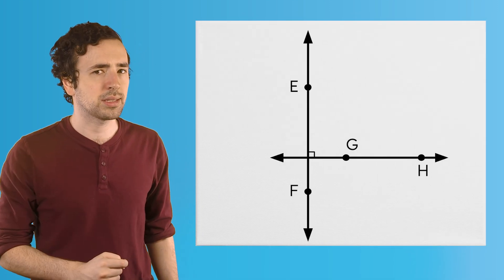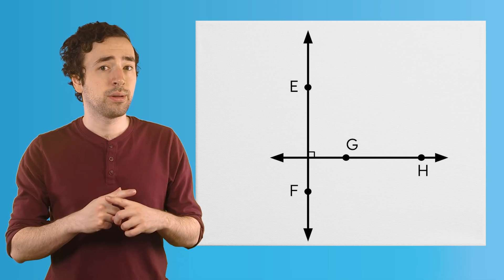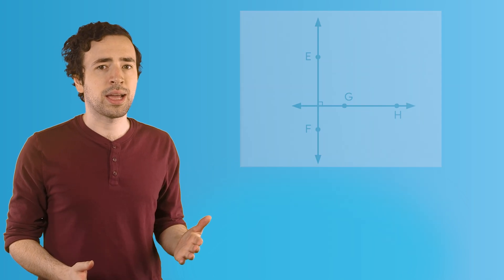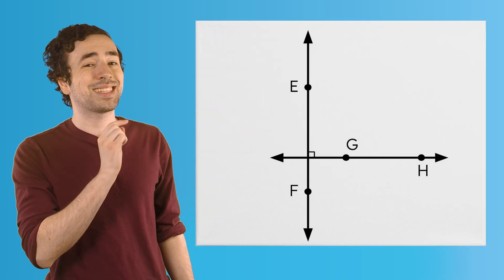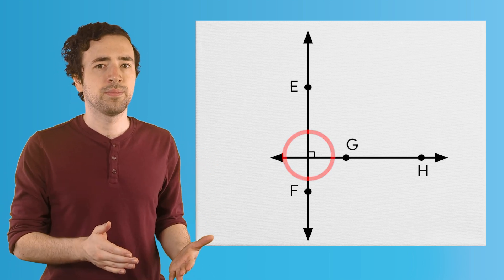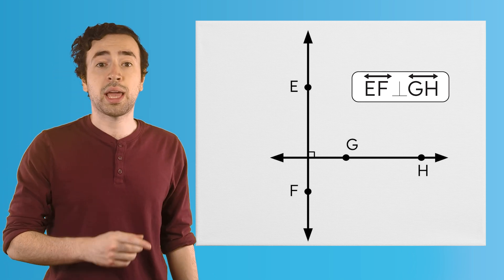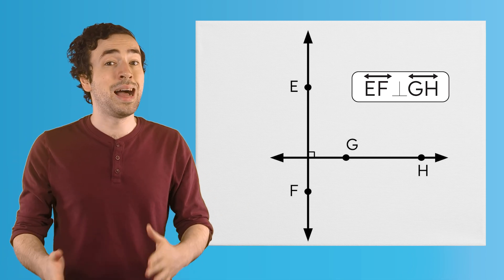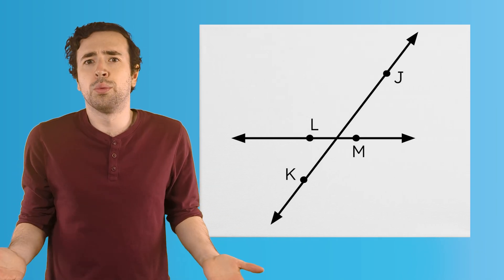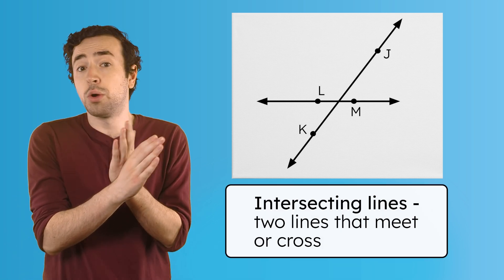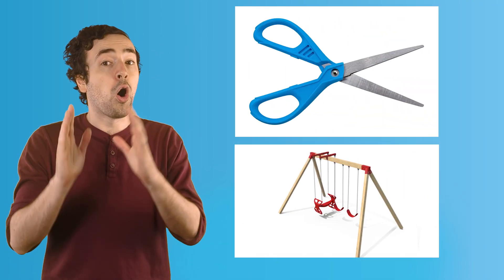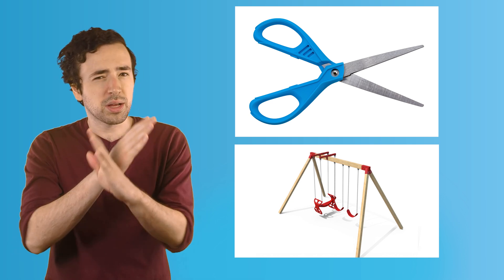What about this set of lines? What do you notice about where they meet or cross each other? They form a square corner where they cross, and they're called perpendicular lines, like the corner of a picture frame. You can identify them on a model by finding the little square symbol. When naming perpendicular lines, we use a symbol that looks like a vertical bar intersecting a horizontal bar, so this says line EF is perpendicular to line GH. But lines that cross don't always form a square corner. If two lines cross each other but don't form a square corner, we call them intersecting lines, like a pair of scissors or the top of a swing set frame. All perpendicular lines intersect, but not all intersecting lines are perpendicular.